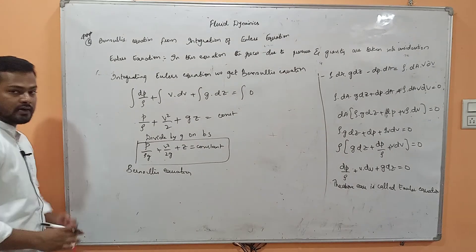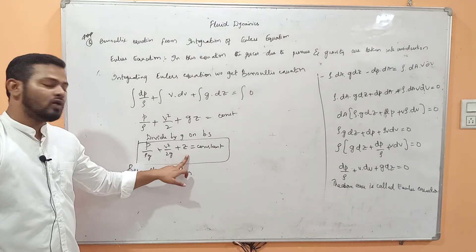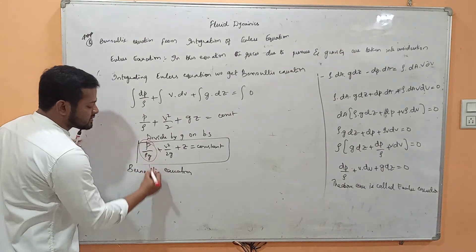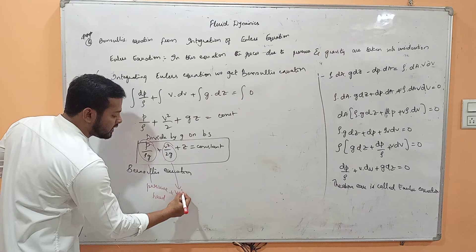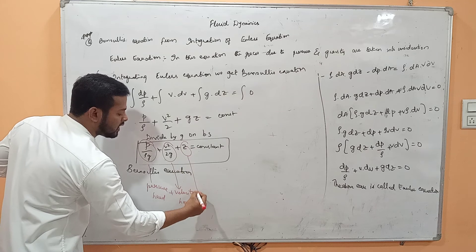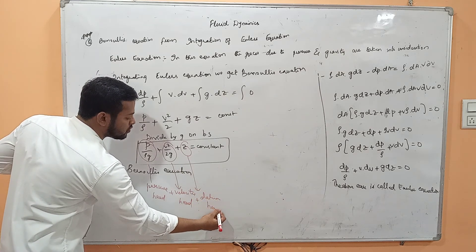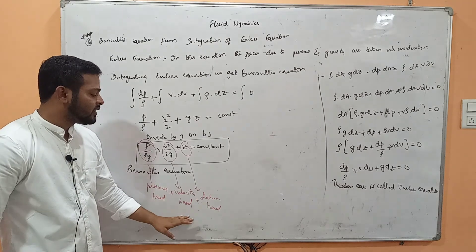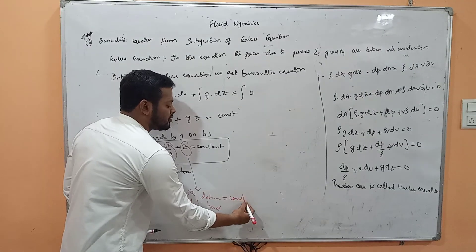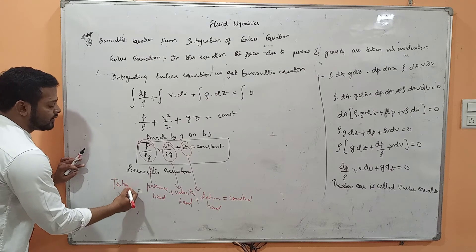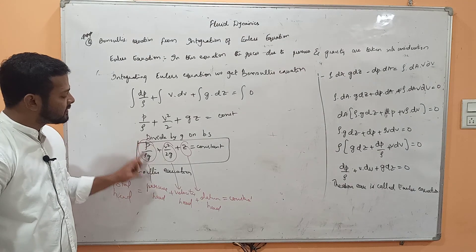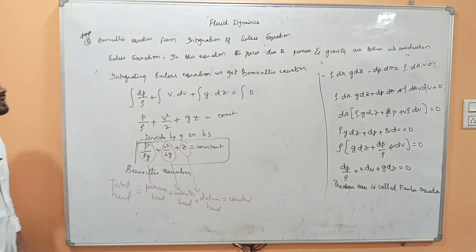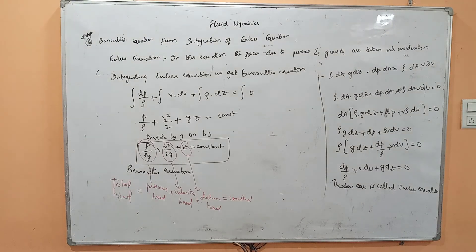In Bernoulli's equation, P/(ρg) is called the pressure head, V²/(2g) is called the velocity head, and Z is called the datum head. Together they form the total head. Bernoulli's equation states that the sum of pressure head, velocity head, and datum head at any point is constant. If a question asks for total head, find P/(ρg) + V²/(2g) + Z. Thank you everyone.